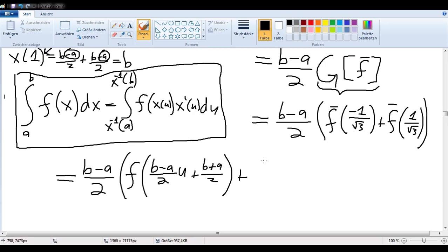Then plus f of... well, I guess I shouldn't write u there, should I? I should actually write what it is that we're putting in there. After all, we're talking about f of this here. So I'll just write that in: negative 1 over the square root of 3. That is a negative 1.